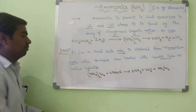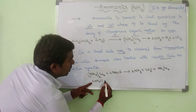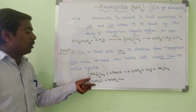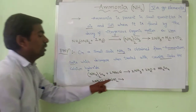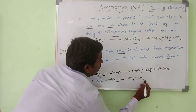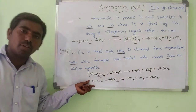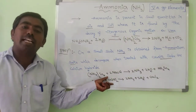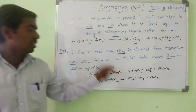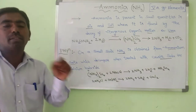Another example: I am taking two moles of ammonium chloride. To this, I am adding calcium hydroxide. When ammonium chloride reacts with calcium hydroxide, it forms NH₃ along with water molecules and CaCl₂. Here also, the ammonium salt, when treated with calcium hydroxide, decomposes into ammonia. This is the method for manufacturing ammonia on a small scale in the laboratory.